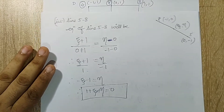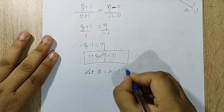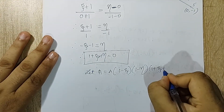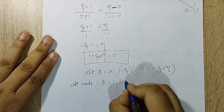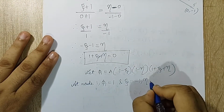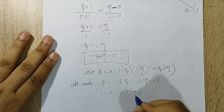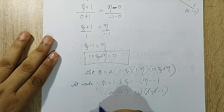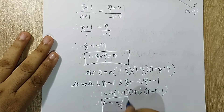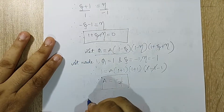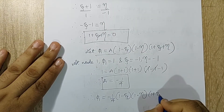Let phi_1 = A × (1 - zeta)(1 - eta)(1 + zeta + eta). At node 1, phi_1 = 1 and zeta = -1, eta = -1. Substituting: 1 = A × (1+1)(1+1)(1-1-1), which gives 1 = A × 2 × 2 × (-1) = -4A. Therefore A = -1/4. So phi_1 = (-1/4)(1 - zeta)(1 - eta)(1 + zeta + eta).